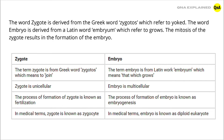The term Zygote comes from the Greek word Zygotos, which means 'to join.' The term Embryo comes from the Latin word Embryo, which means 'that which grows.' Zygote is unicellular, whereas Embryo is multicellular.